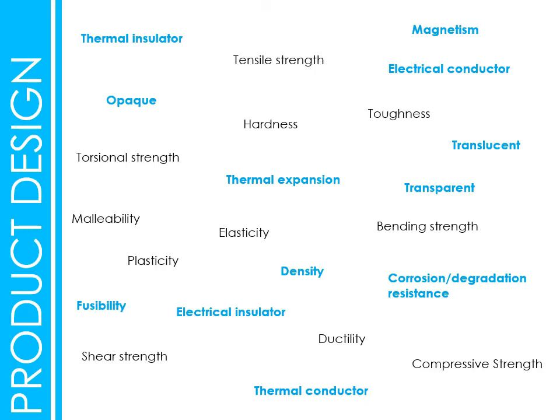Fusibility is how easily a material can turn into a liquid — solder is a good example, as it heats and very quickly turns into a liquid, which is why it's good for soldering. Electrical insulator stops electricity passing through it. Thermal conductor transfers heat very quickly — metals are great for this. Corrosion and degradation resistance is a material's ability to resist oxidisation and breaking down when exposed to oxygen, moisture, and similar elements.